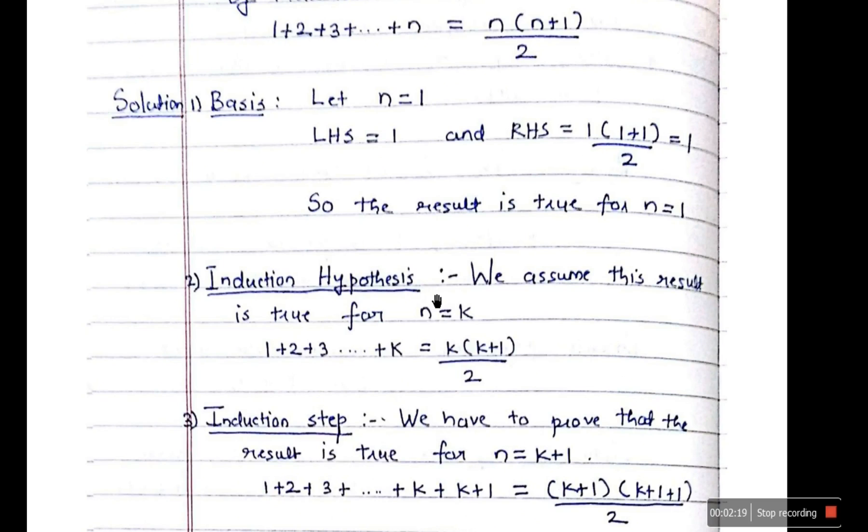Second step is induction hypothesis. Now we assume that the result is true for n equal to k. That's why we just substitute instead of n, we substitute k. So we have 1 plus 2 plus 3 plus dot dot dot till k is equal to k into k plus 1 divided by 2.